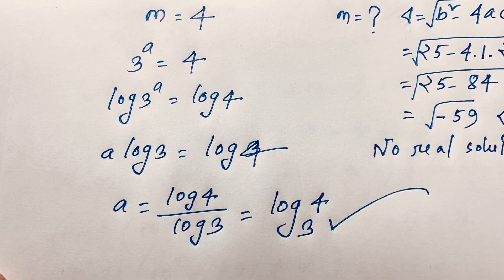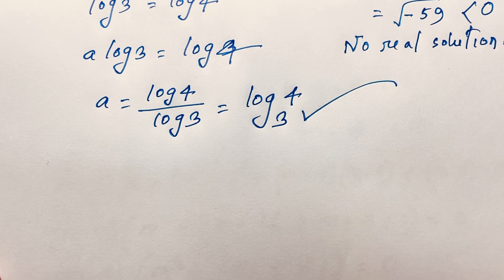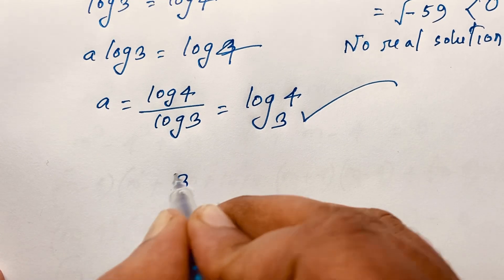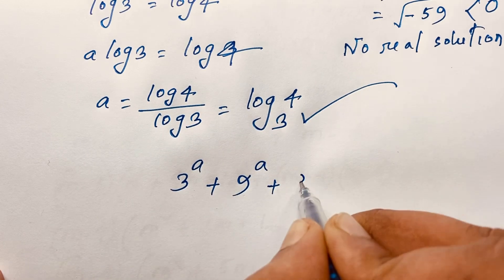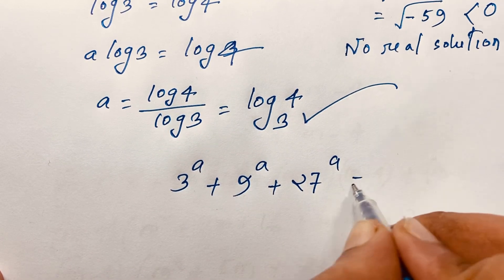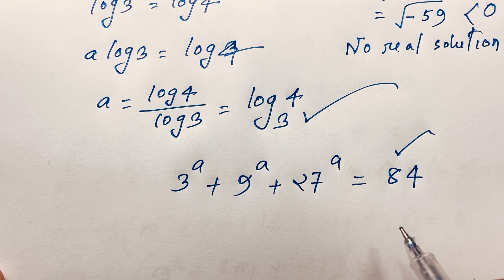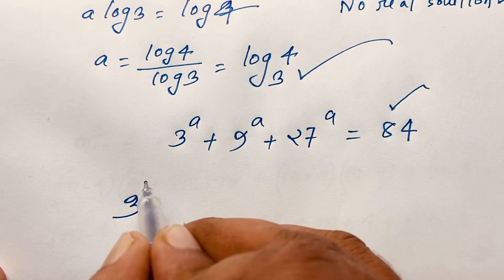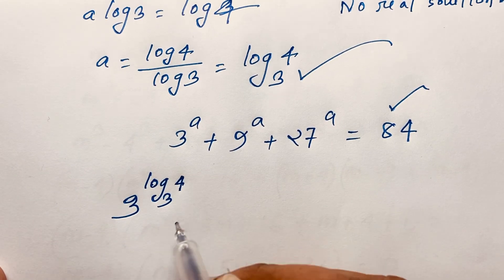This simplifies to a = log base 3 of 4. That is our final answer. Now let's verify: substituting back into 3^a + 9^a + 27^a = 84.